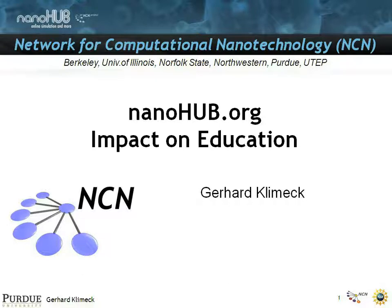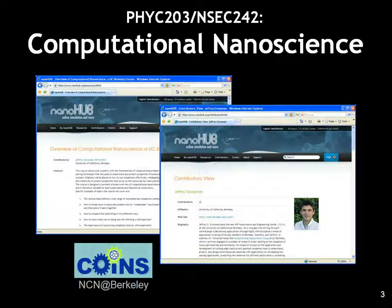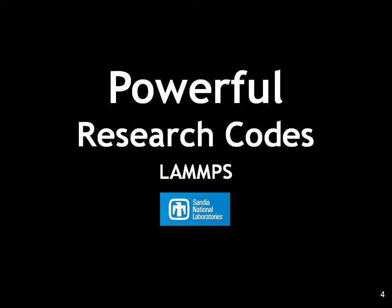In this presentation I would like to overview some of the impact that can be had on education with nanohub.org. Here is one example where Jeff Grossman at Berkeley has developed a whole course on computational nanoscience that he taught at Berkeley, fundamentally based on nanohub simulations. In there he has very powerful research codes like LAMPS, which is a molecular dynamics and electronic structure code. He delivers that to students without having to overwhelm them with all the LAMPS technology, installation, and input deck, but you can enter structural information into a toolset.